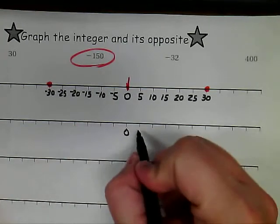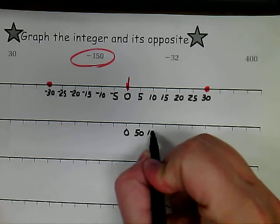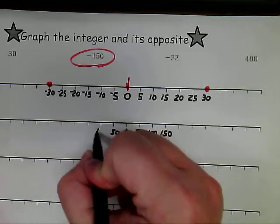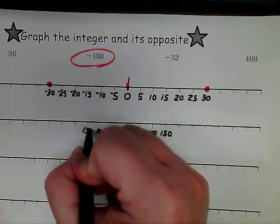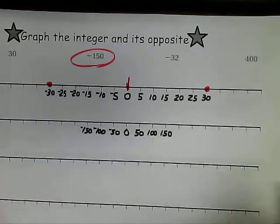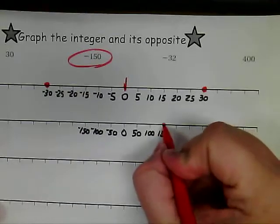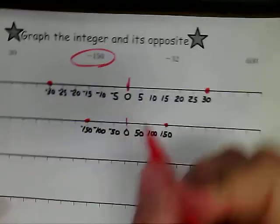We want to make sure we're counting by numbers that are easy to count by for our intervals. Because I'm going to 150, I'm going to count by 50s: 50, 100, 150. And then again, 50, 100, 150. These would be our negative integers. When it's time to graph those integers and their opposites, they will be equidistant from zero.